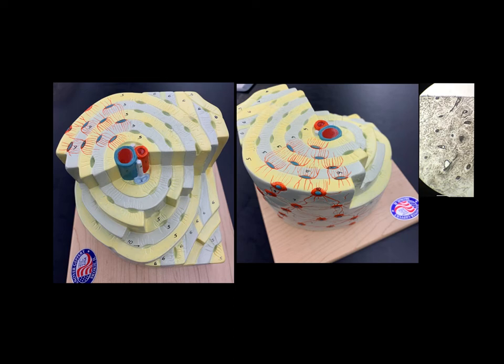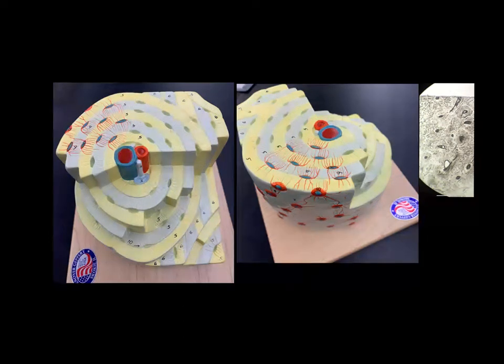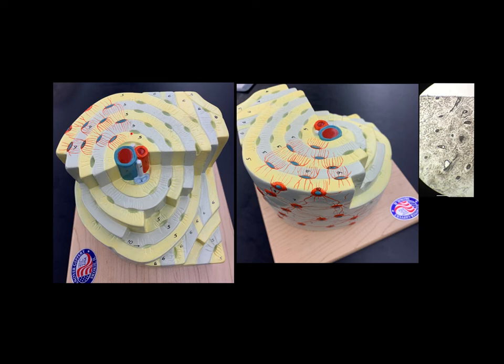Now, the bone cells, the osteocytes, are separated from each other by this very dense mineralized bone. So how does one bone cell, say that's way out here, get nutrients from the blood supply that's way over here in the middle of the Haversian canal. It can't diffuse because the material that makes up these lamellae is so dense.